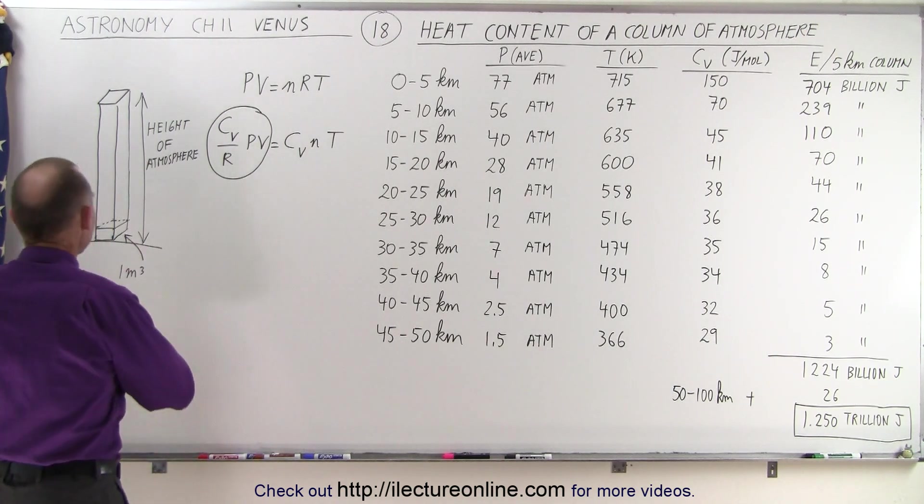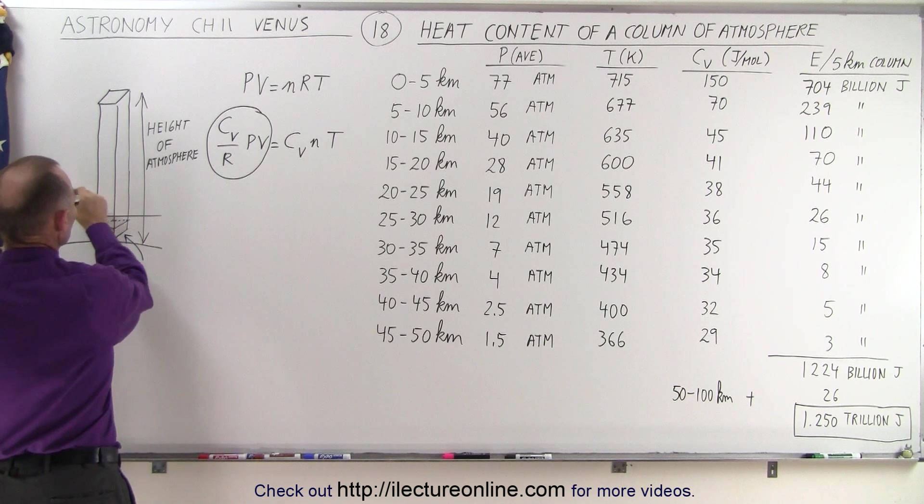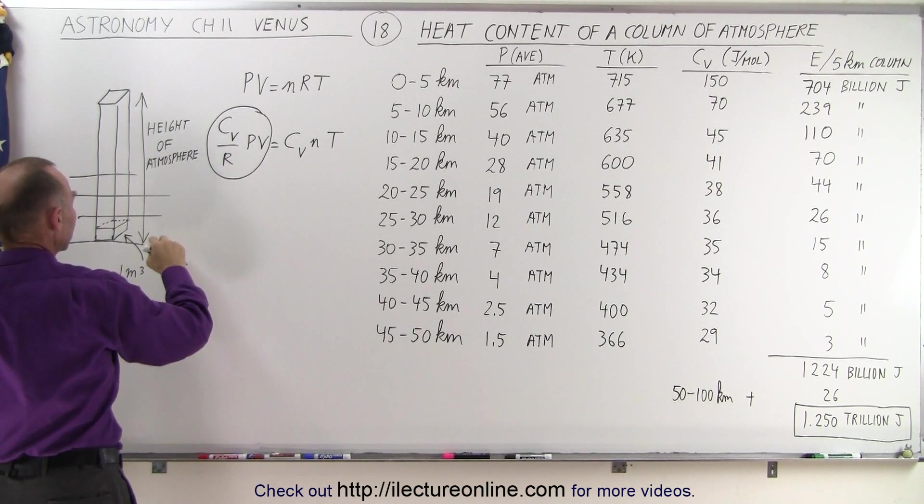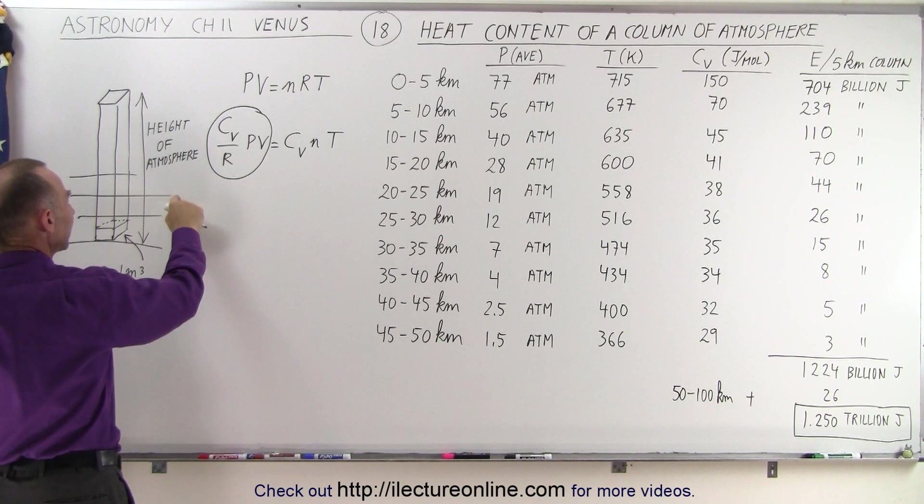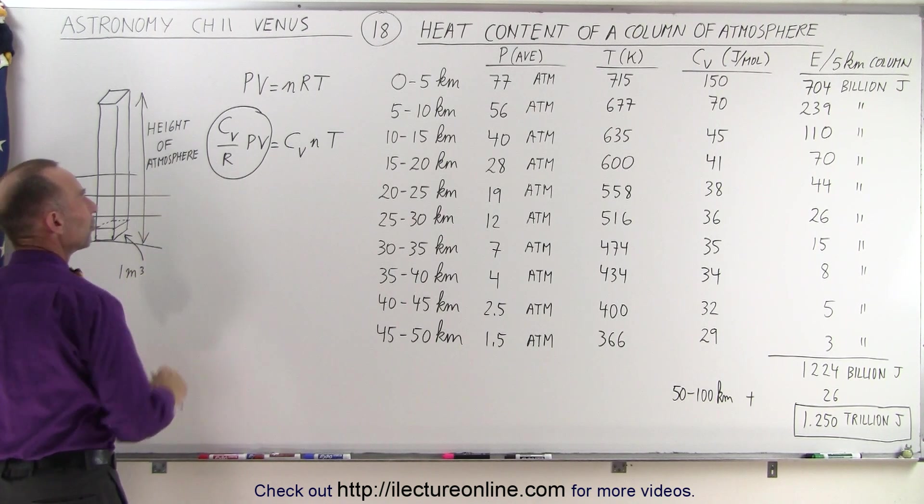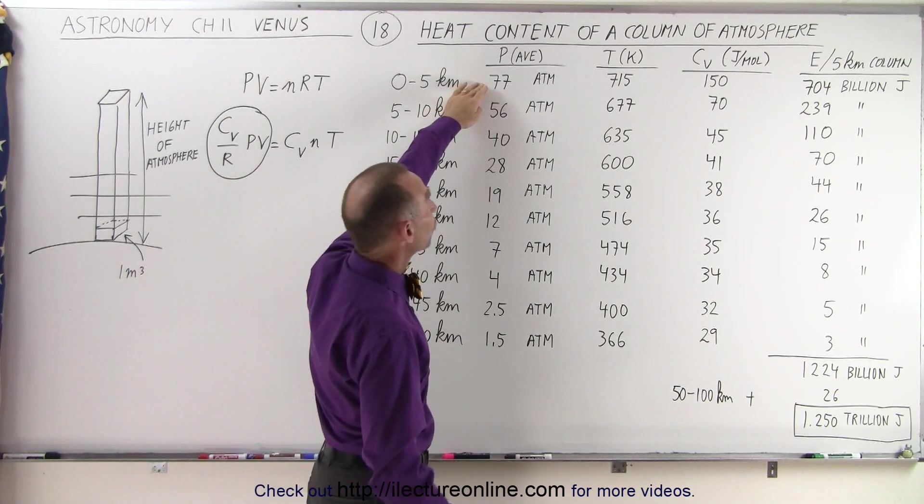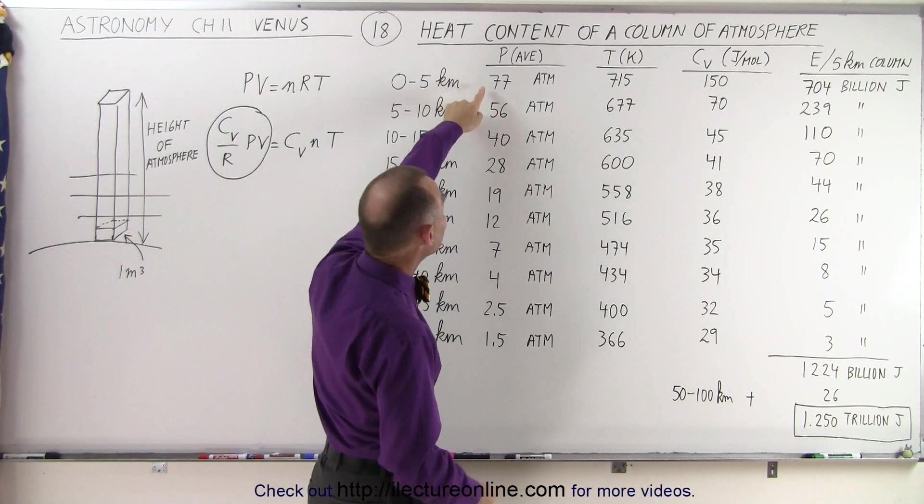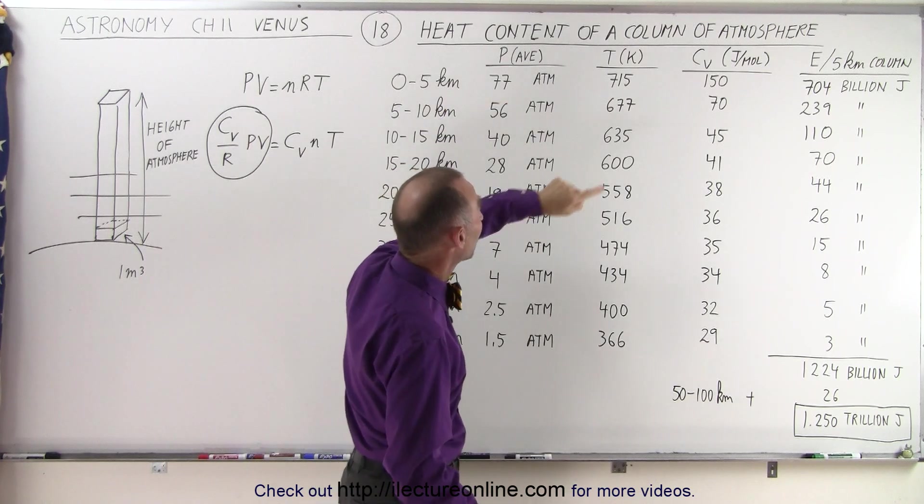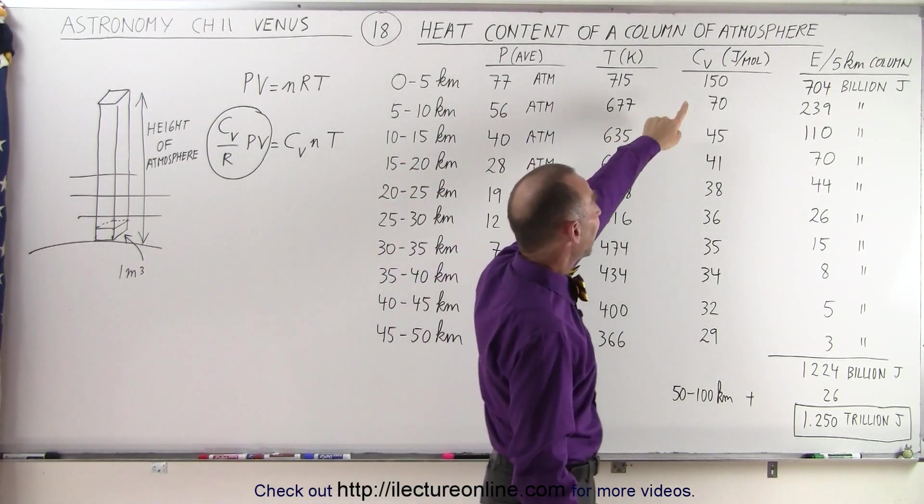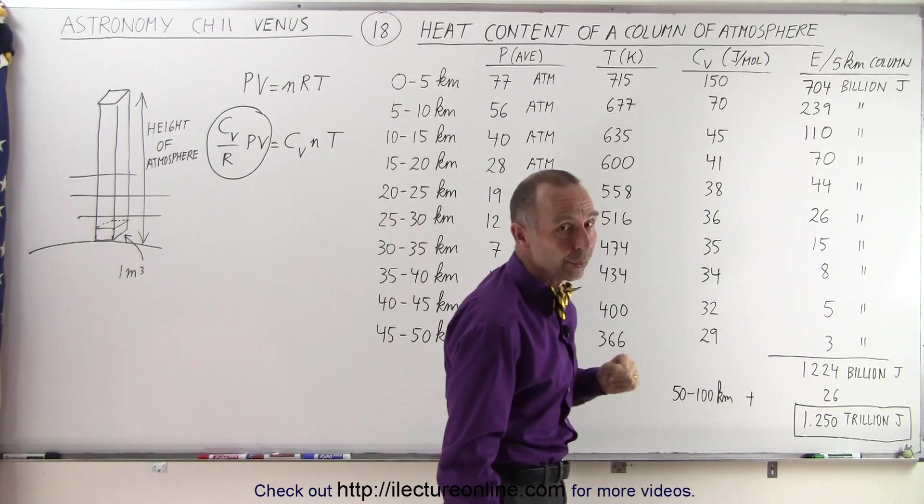To do that, we're going to section it off in 5 kilometer sections. So we're going to calculate the energy content between 0 and 5 kilometers, between 5 and 10, 10 and 15 and so forth, because for each of those layers, we've already calculated the average pressure in atmospheres, the average temperature, and the specific heat for that particular region.